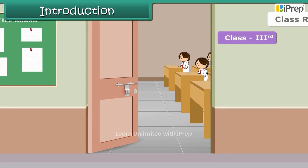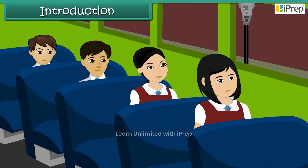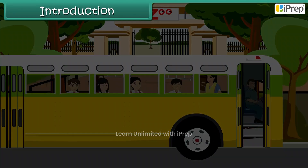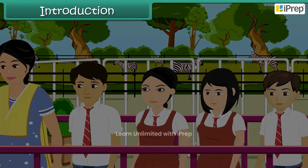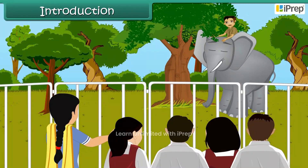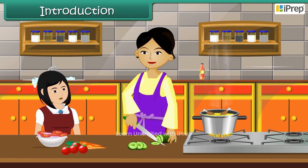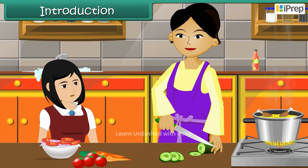It was the last day of school. The school had organized a picnic to the zoo and Poonam was so excited. She marveled at each and every animal and observed all of them. As she came back, she narrated to her mother what she saw in the zoo. Let us see what she saw.